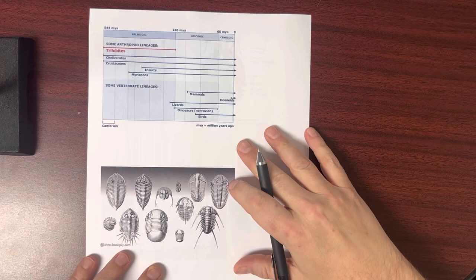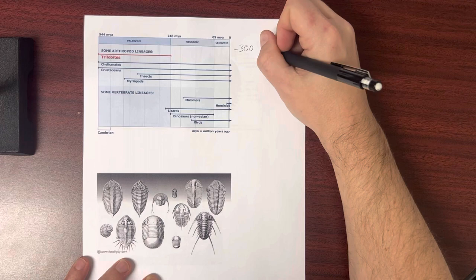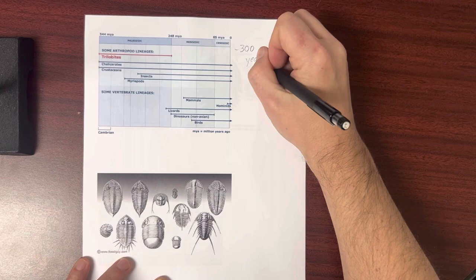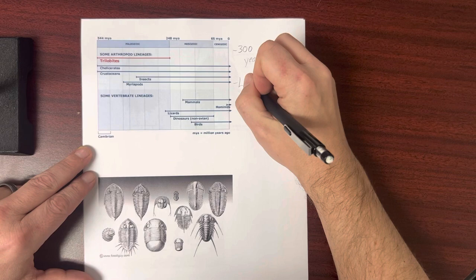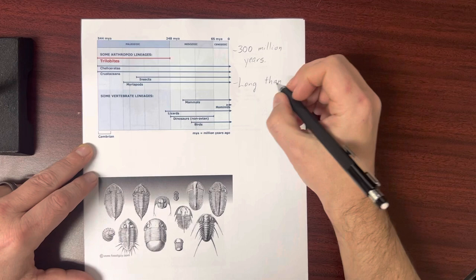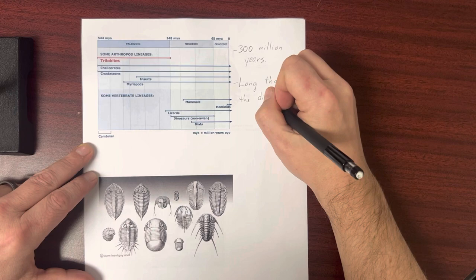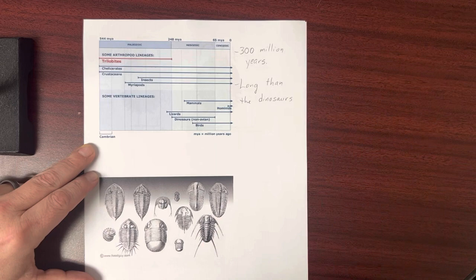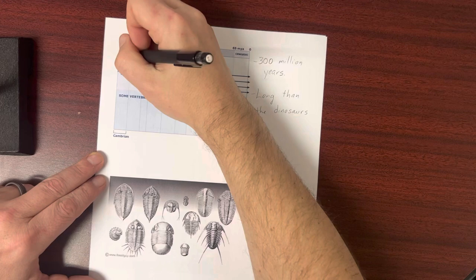When I say a long time, I really mean a long time. Approximately 300 million years. Now, that is so long that it's even longer than the dinosaurs. The dinosaurs were on Earth for maybe 250 million years or so, which is a long time when you look at the history of life on Earth. But trilobites were so well adapted to their environment that they lived even longer.